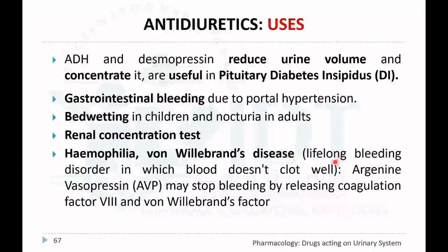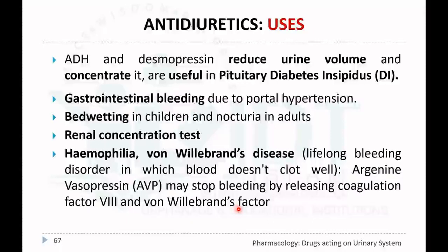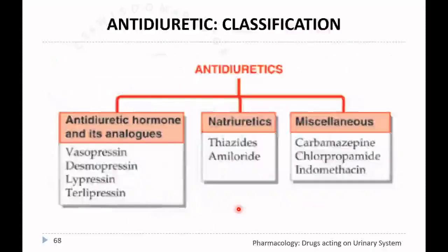Anti-diuretic hormone is also used for the treatment of hemophilia and von Willebrand disease. Arginine vasopressin may stop bleeding by releasing coagulation factor VIII and von Willebrand factor. These are the different uses of anti-diuretic hormone.